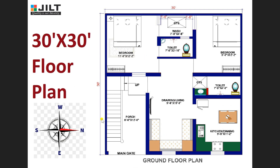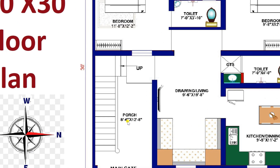This is a floor plan facing east and this plan is designed as per Vastu. Now I am entering into the main gate of our plan. From here I have entered and there is a porch available of size 8 feet 6 inches by 12 feet 8 inches. On the left hand side you can see the staircase is available to move towards the upstairs.